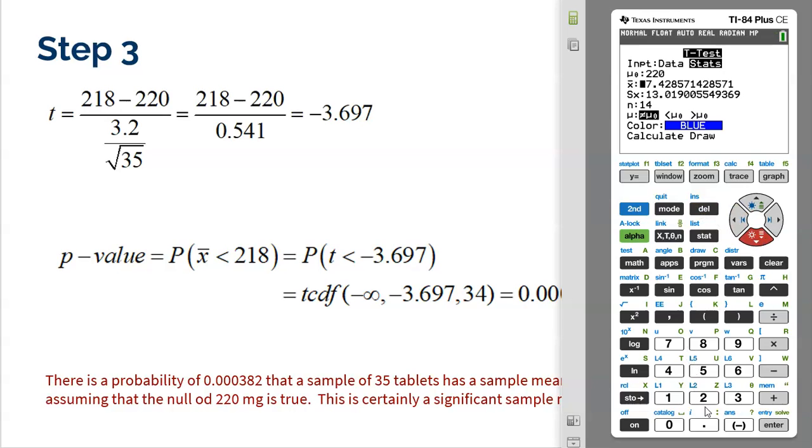Then it's going to ask for the mean. The mean of our sample was 218 milligrams. Then underneath that is the standard deviation. Our standard deviation was given to us as 3.2. That's the standard deviation of our sample. And our sample size was 35.